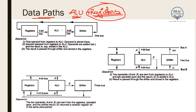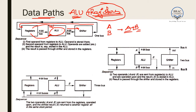This data path can be designed in three different ways. In the first approach, the first operand comes from registers to the ALU in cycle one, the second operand comes from registers to the ALU in cycle two, the ALU computes the result in cycle two, and in cycle three the result is passed to a shifter which sends it back to the register. This approach takes three clock cycles.